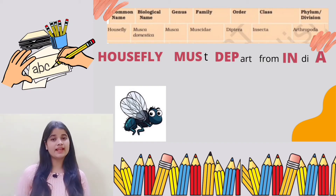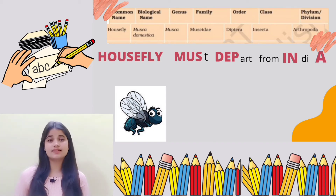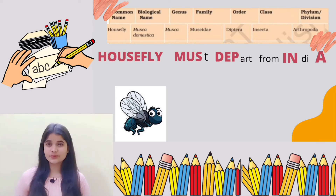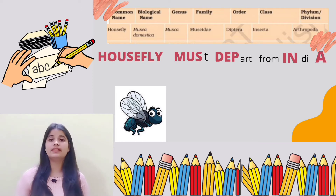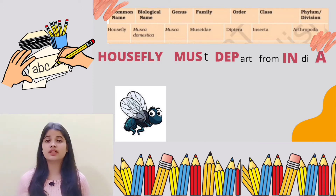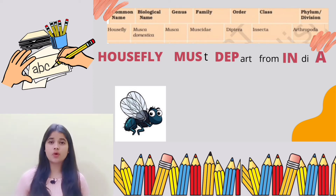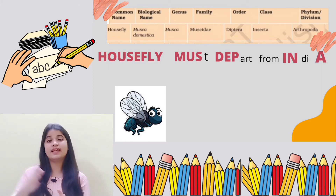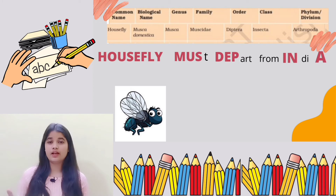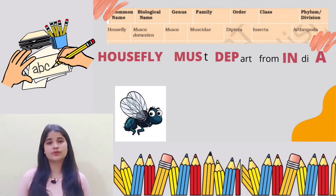Moving to the next example — that is housefly. Musca domestica is the scientific name for housefly. And the trick is 'Housefly must depart from India.' Where 'Must' represents Family Muscidae, 'Depart' represents Order Diptera, and you need to break the term 'India' as 'Indi' and 'A' — where 'Indi' represents Class Insecta, whereas 'A' represents Phylum Arthropoda.